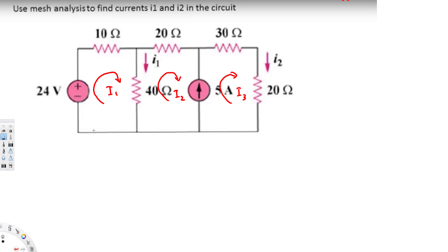In mesh analysis we always use Kirchhoff's Voltage Law, so we have to have voltage everywhere. But right here we don't have any voltage — we have a current source and we don't know what the voltage across this current source is. In this kind of situation we use a super mesh. A super mesh basically means we consider the whole thing as one mesh and solve the problem.